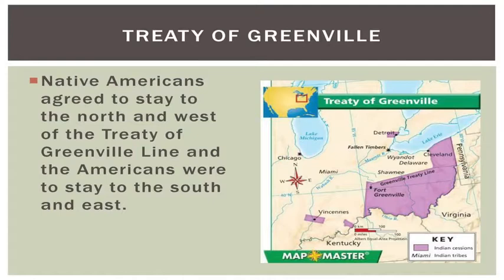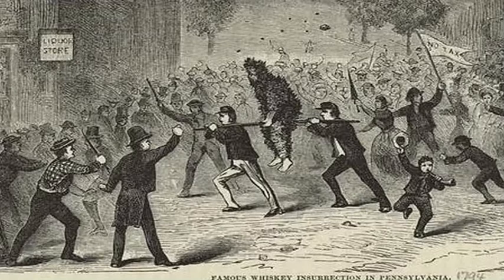Hamilton wanted to use these funds to start paying down the war debts from the Revolution, which the federal government had taken on from the states. The farmers, particularly those in western Pennsylvania, saw the tax as a violation of all they had fought against in the war for independence — especially the idea of no taxation without local representation. They refused to pay the tax and organized for resistance. For the next roughly three years, they protested, even tarring and feathering tax collectors and parading them through the streets.